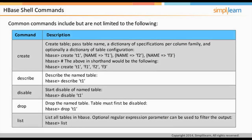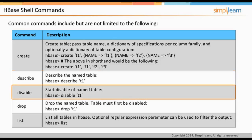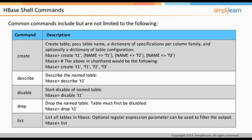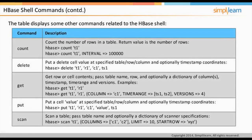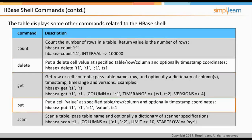Common HBase shell commands include: CREATE, used for creating a table; DESCRIBE, for describing a named table; DISABLE, for disabling a table; DROP, for dropping a table; and LIST, for listing all tables in HBase. Additional commands include COUNT, for counting the number of rows in a table; DELETE, for deleting a cell value; GET, for getting the contents of a row or cell; PUT, for putting a cell value; and SCAN, for scanning a table's values.